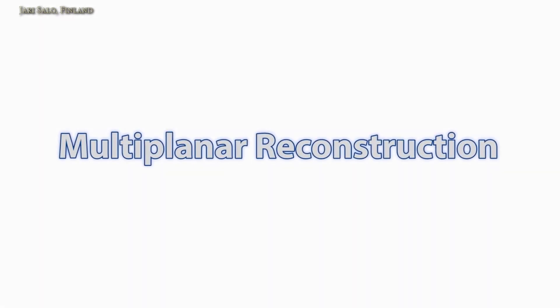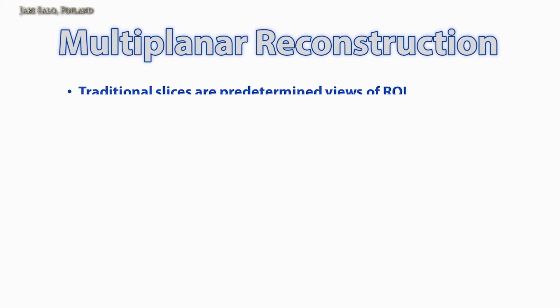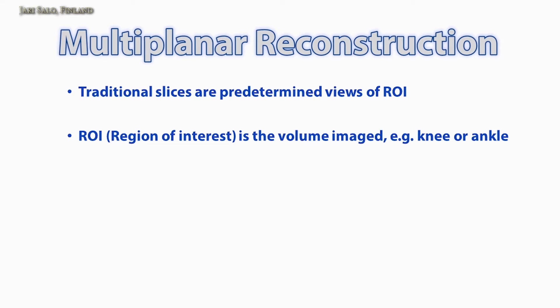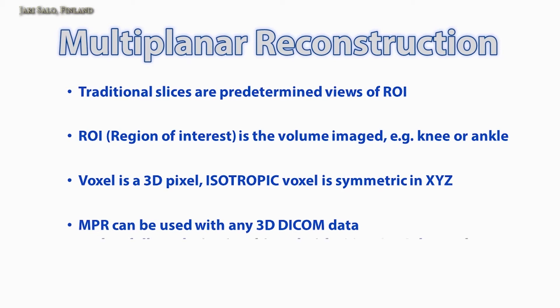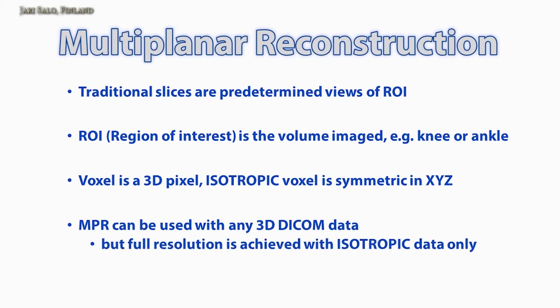The multiplanar reconstruction is the key advantage of isotropic data. It means you take the original imaging data — whether it's slice-based CT or MRI data — put it in software, rotate it afterwards, and get a new view angle. This works best with isotropic data so that you have the same resolution in any direction. The Verity CBCT scanner offers this kind of data, so you can review it afterwards in any direction with any slice thickness you decide.